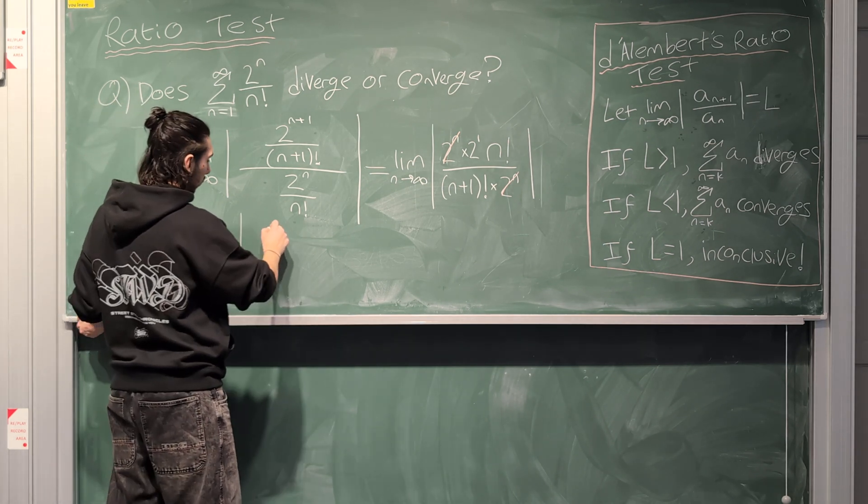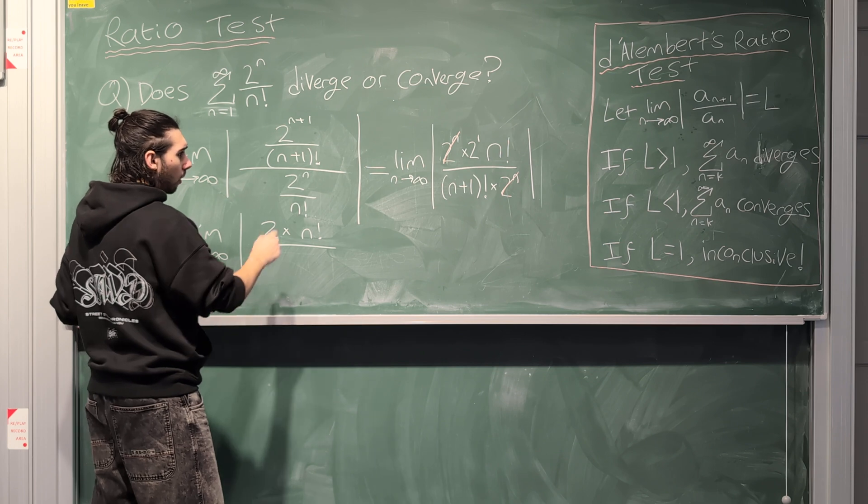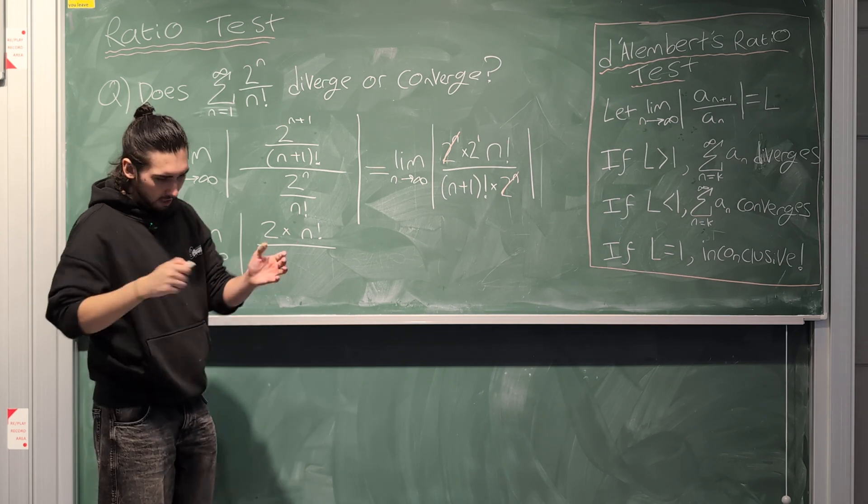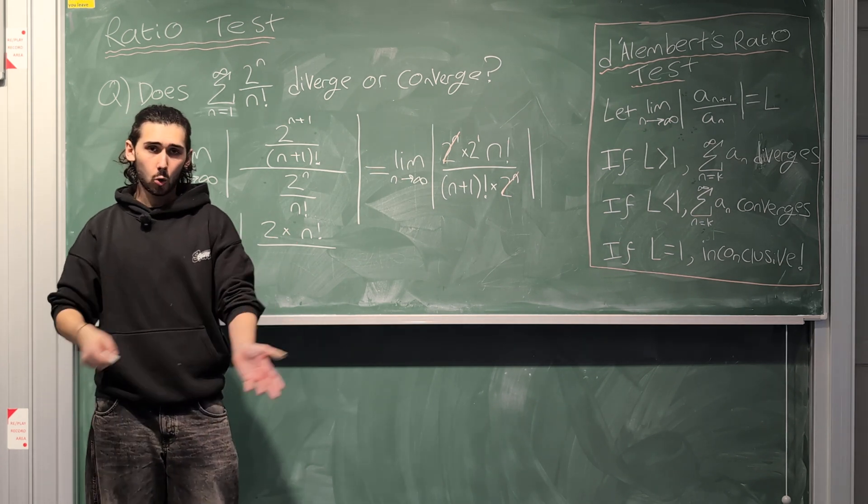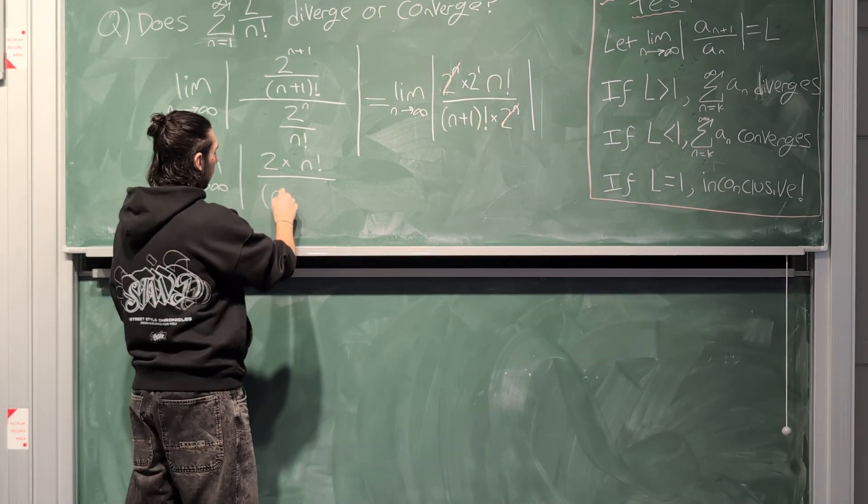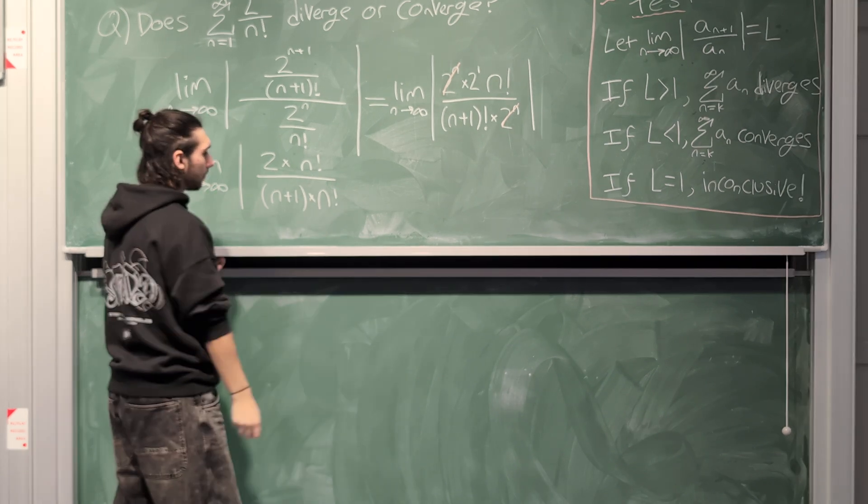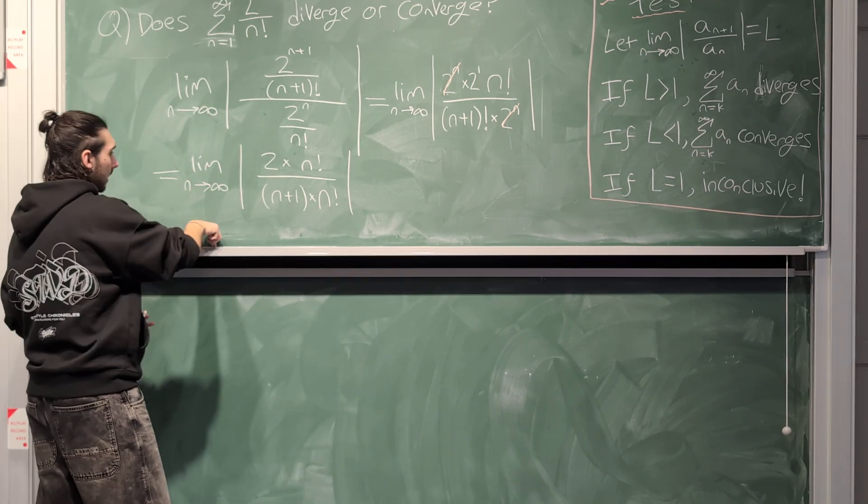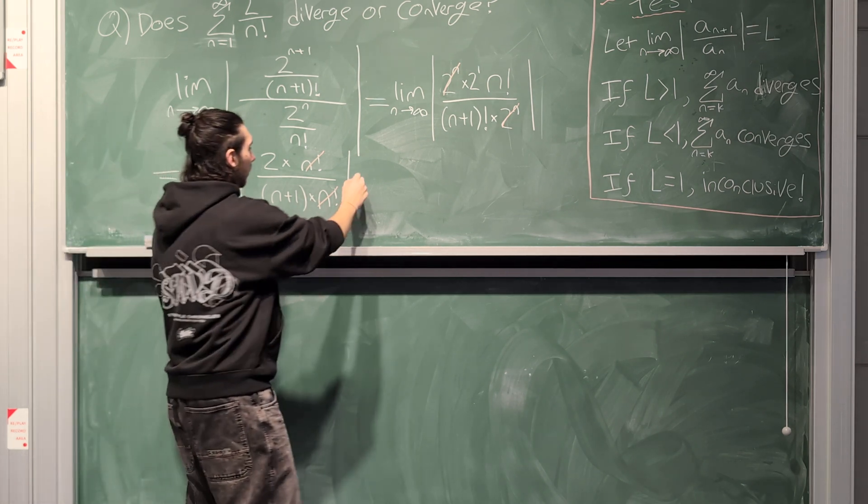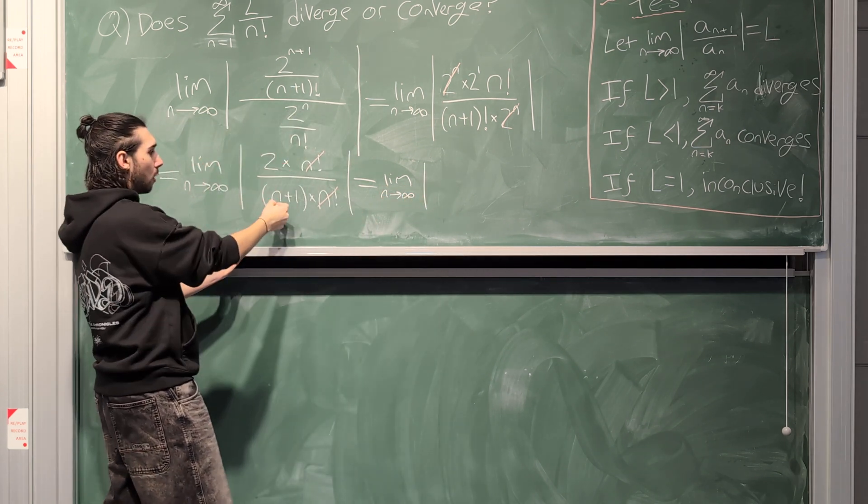Now, what we can also do is we can simplify the n factorial or the n plus 1 factorial. So on the numerator, we just have 2 times n factorial. And on the denominator, of course, we have n plus 1 factorial, but that's the same as n plus 1 times n times n minus 1 times n minus 2 times n minus 3, all the way down to 3 times 2 times 1. But what I can do is I can just rewrite it as n plus 1 and then all of the other terms, I can just get them by just writing them as just n factorial. And then I can just cancel these out.